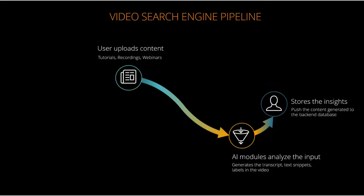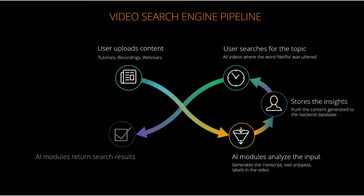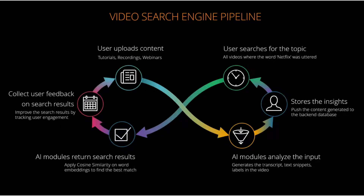In our case, we're going to use MongoDB, which is really good for unstructured content. Once the content is stored in the database, the user gets notified. The user searches for a topic - let's say Netflix. Machine learning models are going to generate embeddings for the search topic and also for all the text stored in the database. It will apply cosine similarity, which we have seen in one of the previous videos, and then find the best match, returning results to the user. Based on user feedback, search results will be further optimized - we'll track whether the user clicked on the video rendered as a search result, and models will continue to take feedback and be further optimized.